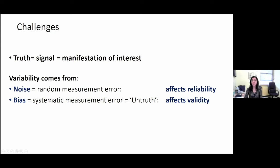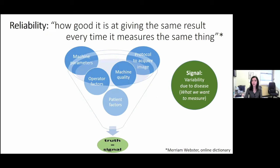Bias corresponds to a systematic measurement error. One affects the variability and reliability, and the second affects the validity.